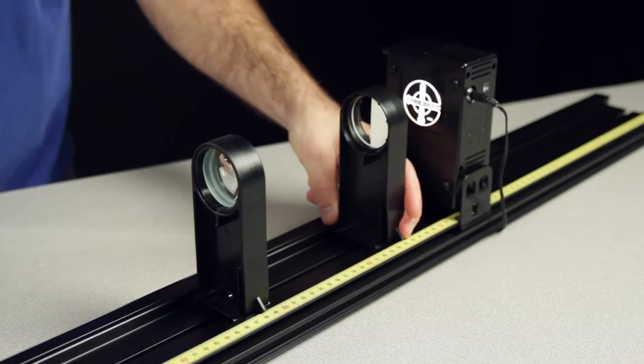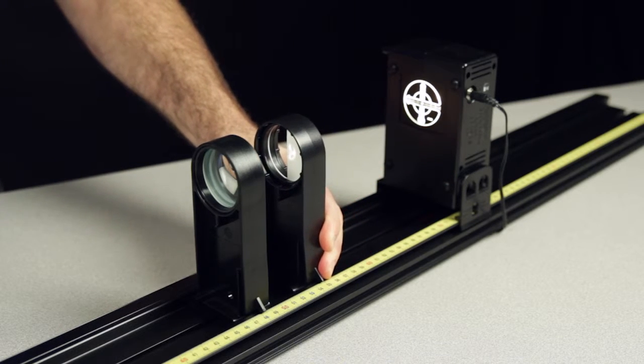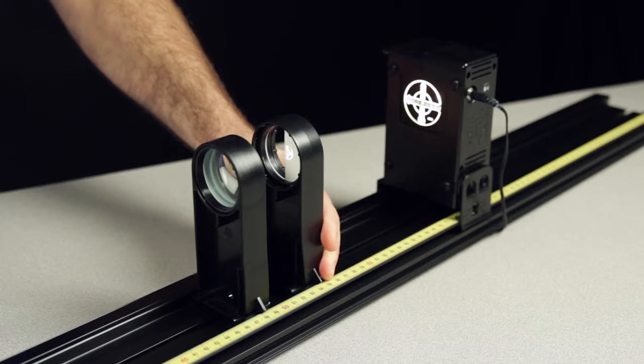To adjust the position of the mirror or viewing screen while mounted into a PASCO Optics Track, gently squeeze the base of either holder and slide it along the length of the track.